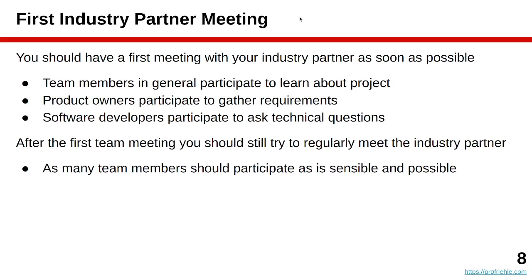These meetings with the industry partner should take place regularly. You need to keep receiving requirements. You will not understand them right in the first meeting. The industry partner will change their opinion as they see your progress, reprioritizing or dismissing past requirements. That's agile — that's business as usual. As many team members as possible should meet the industry partner and learn from them.